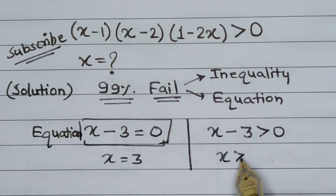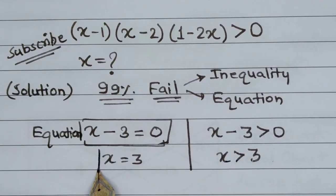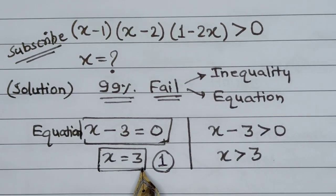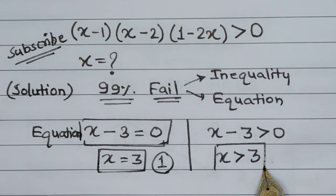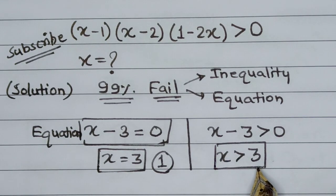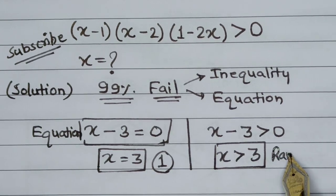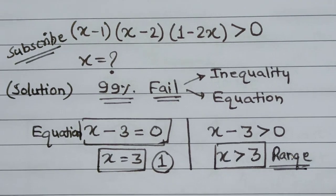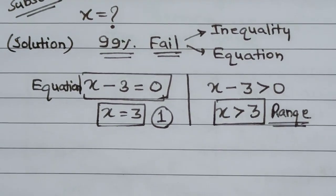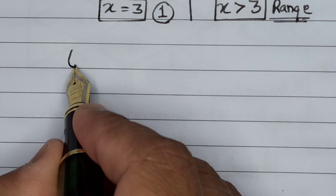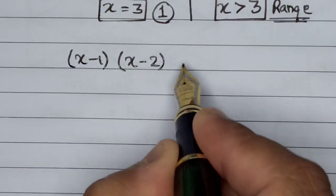When we solve x minus 3 greater than 0, the value of x comes out to be greater than 3. In the equation case we have only one solution — x can only be 3 — but in the inequality case, all numbers greater than 3 up to the end of the number line form part of the solution. So in an equation we get a unique solution, but in an inequality we get a range of solutions. This is the reason about 99% of people fail to solve such problems, because the rules of mathematical inequalities are quite different from those of equations.